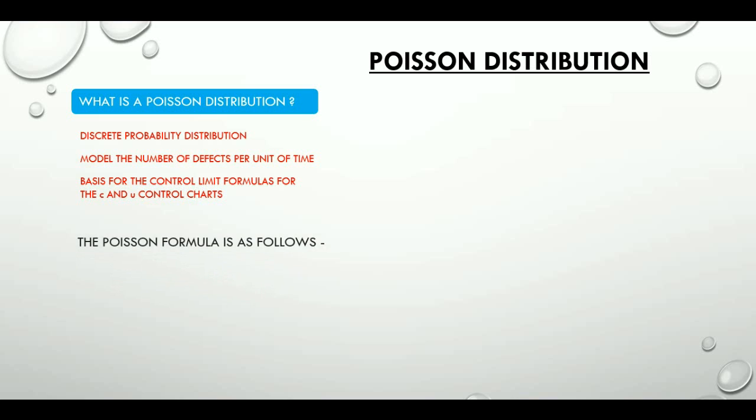Symbolically, the Poisson formula is as follows: lambda raised to the power x multiplied by e raised to the power negative lambda divided by x factorial.